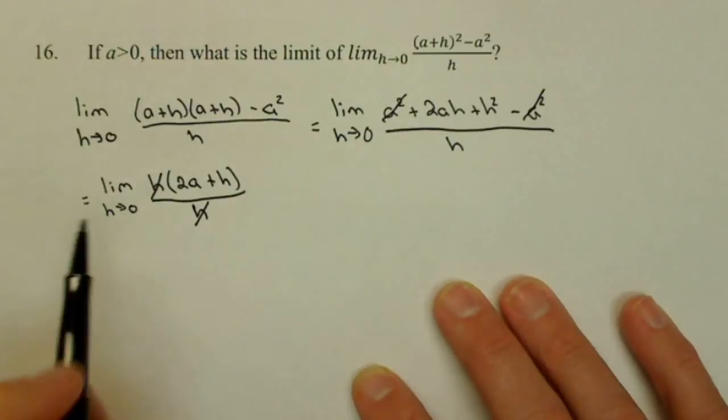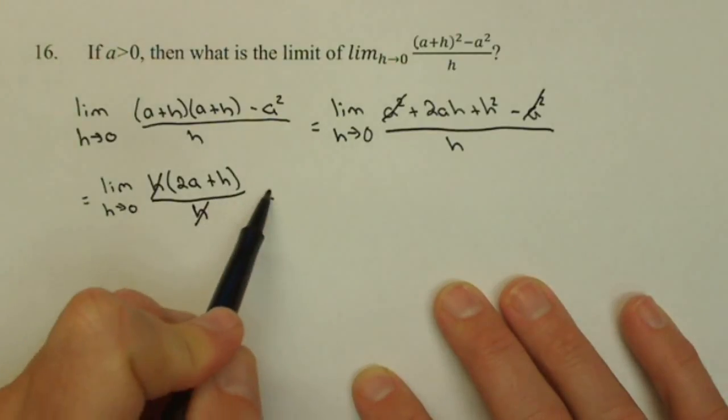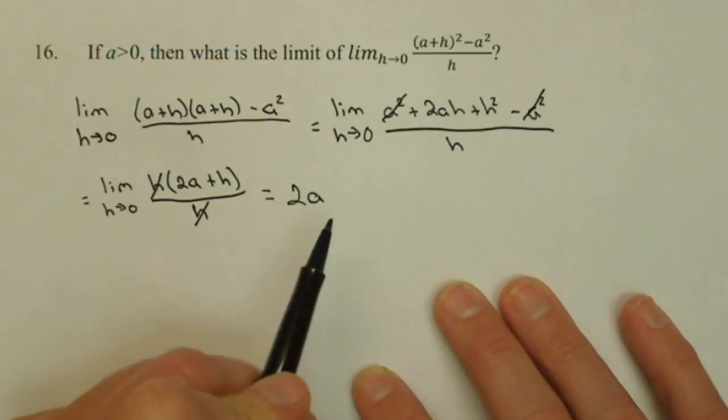Those h's will cancel. Now I can insert 0 for h and I get a final answer of 2ah.